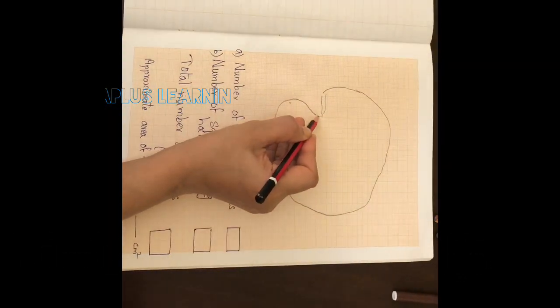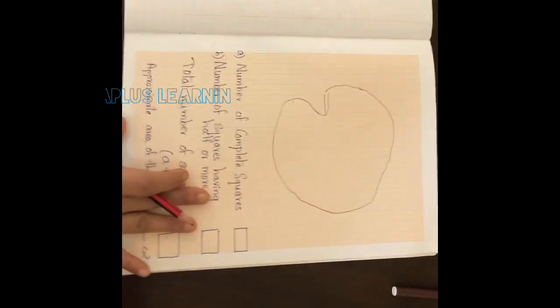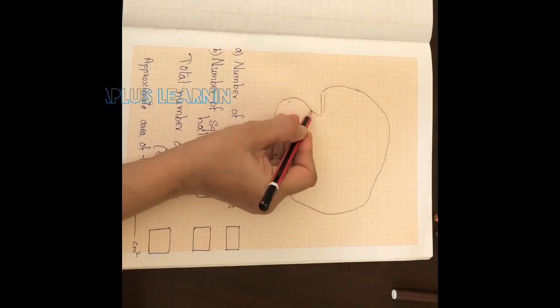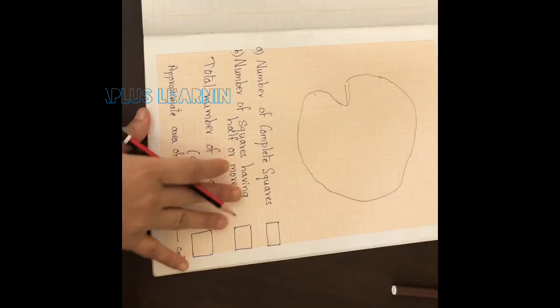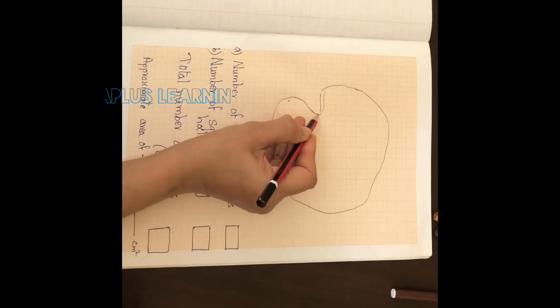First, draw the outline of the leaf neatly over the graph paper. After drawing the outline, you may keep the leaf aside. We have completed the outline.